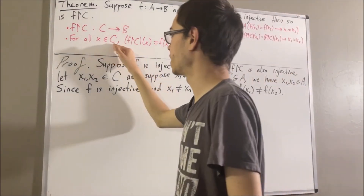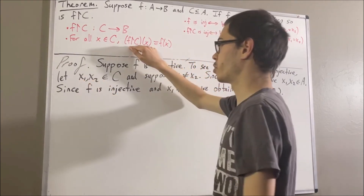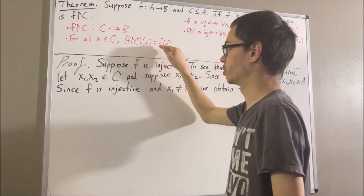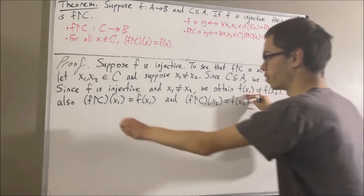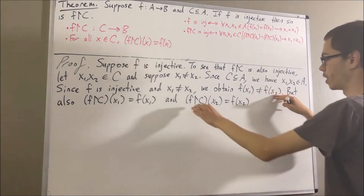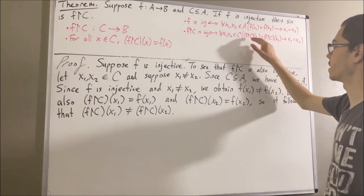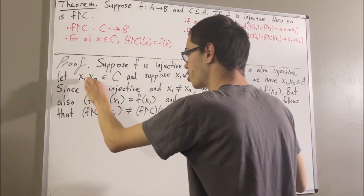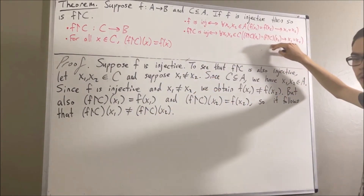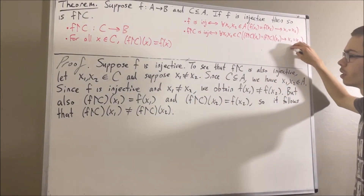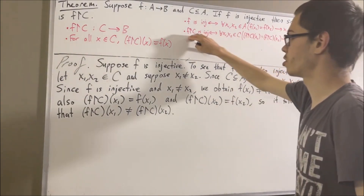But remember, for every element x in C, f restricted to C evaluated at x is equal to f(x). So if we apply this to x1 and x2, we get f restricted to C of x1 equals f(x1), and f restricted to C of x2 equals f(x2). So we can replace f(x1) with f restricted to C of x1, and f(x2) with f restricted to C of x2, giving us f restricted to C of x1 ≠ f restricted to C of x2. We gave ourselves two arbitrary elements in C, supposed x1 ≠ x2, and deduced f|C(x1) ≠ f|C(x2). So the contrapositive holds for all elements of C, which means we've proven that the restriction of f to C is injective.